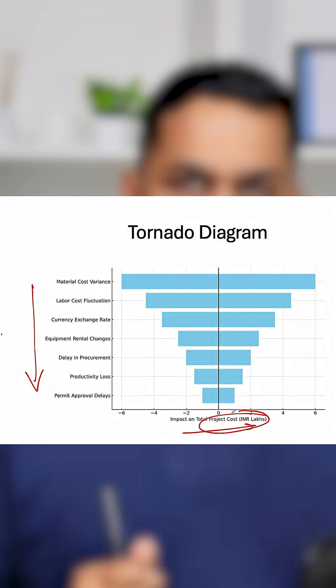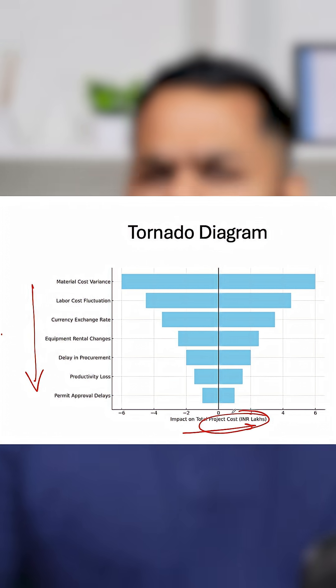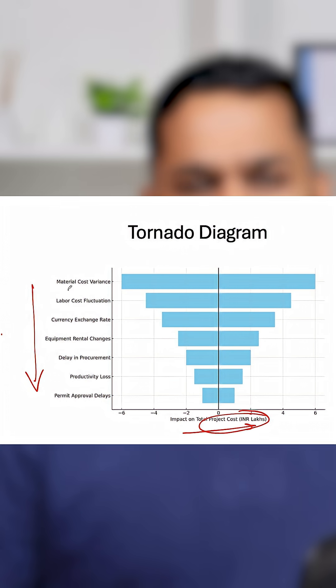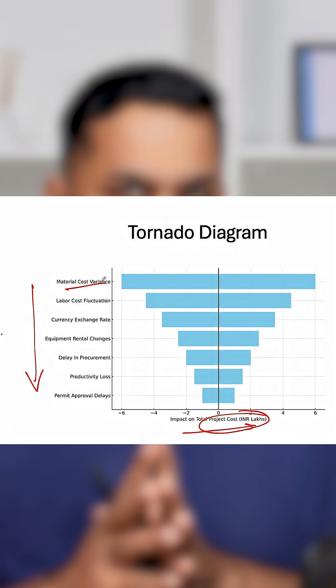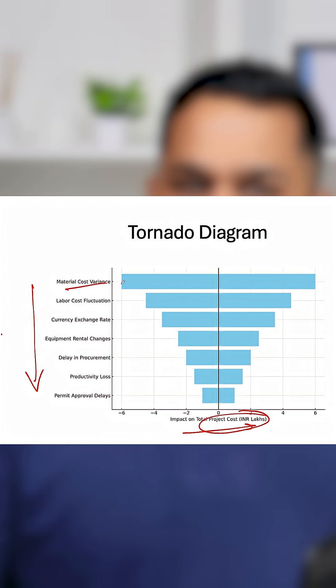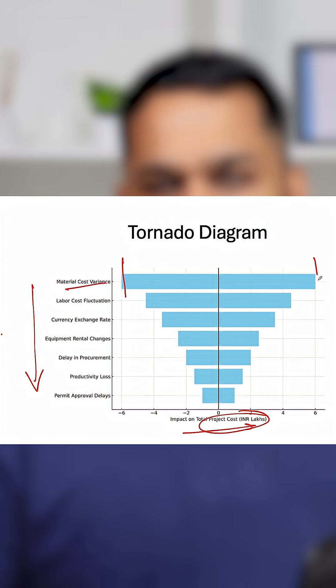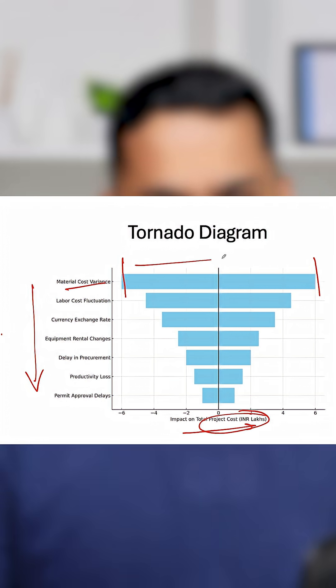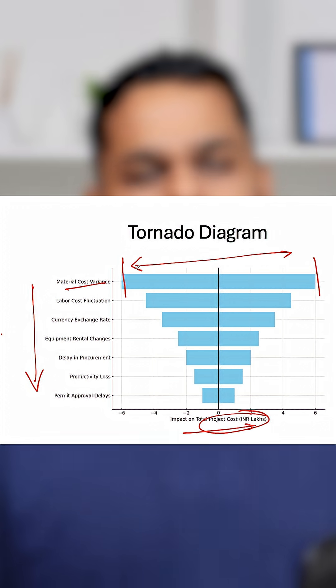Now, if there is, let's say for example, a material cost variance in my project, then it could impact my project in a negative way or a positive way. And the tornado diagram would represent that range to me. Whichever factor shows the biggest bar would have the biggest impact on the project.